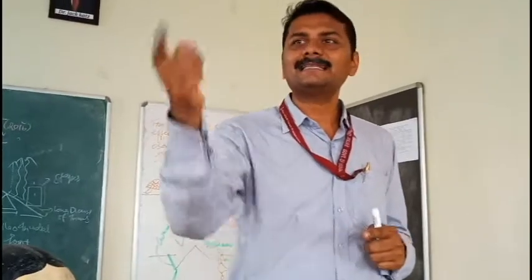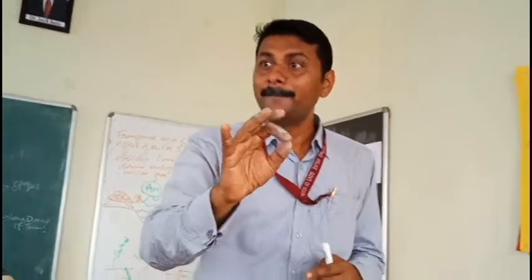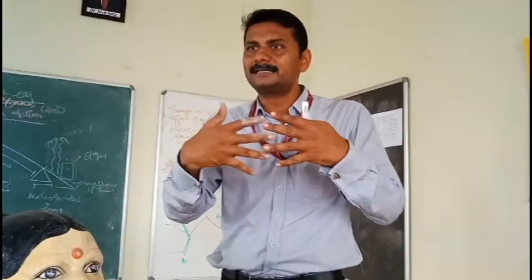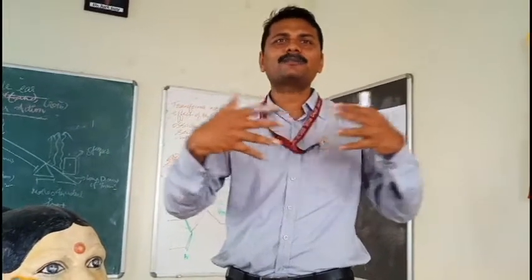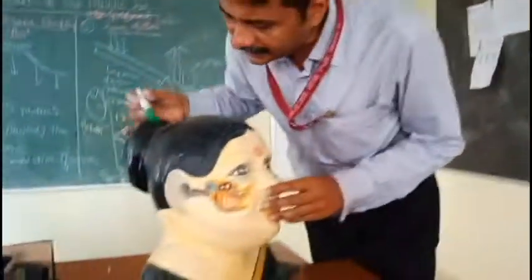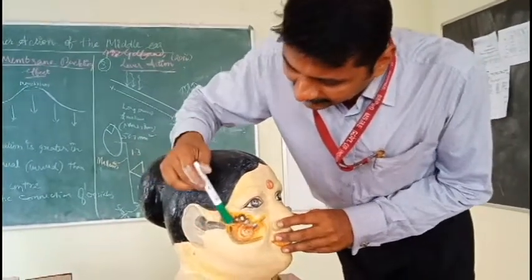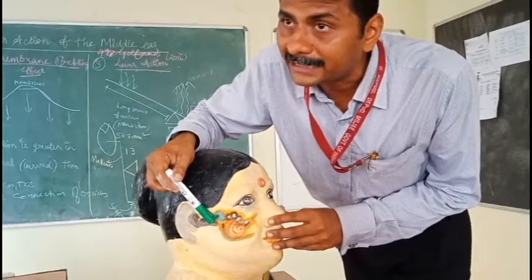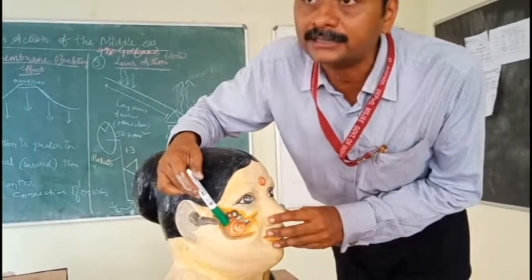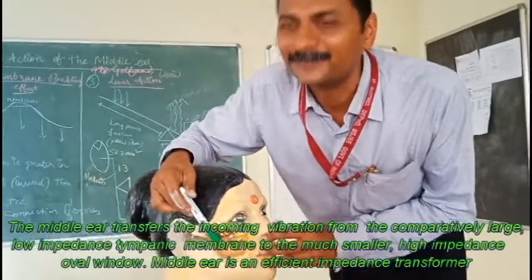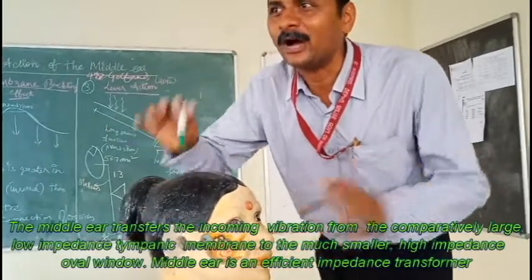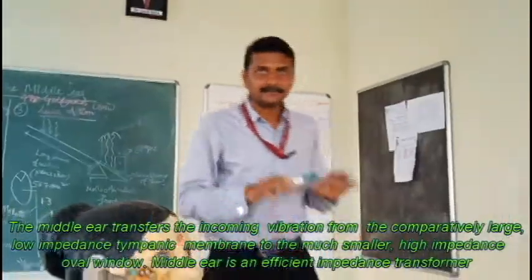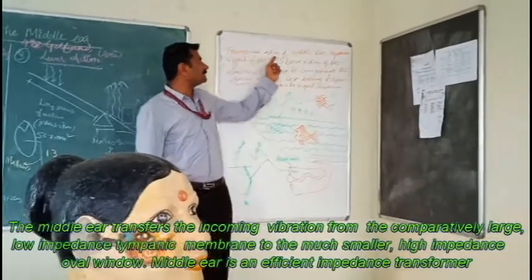What brings about the matching of impedance? A transformer. The transformer which is inside your ears is known as the middle ear. The middle ear was brought in primarily to bring about impedance matching — to avoid the impedance mismatch. So here we have the external ear, the middle ear, and the three bones: malleus, incus, and stapes, with the malleus attached to the tympanic membrane and the stapes on the oval window of the cochlea.